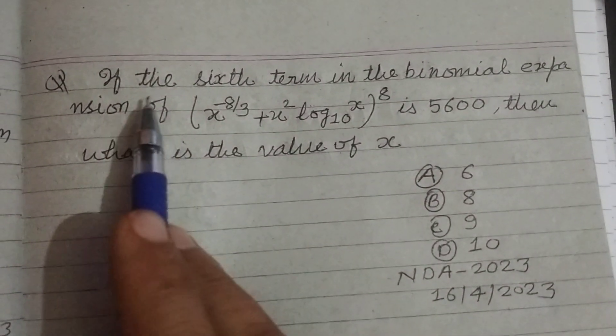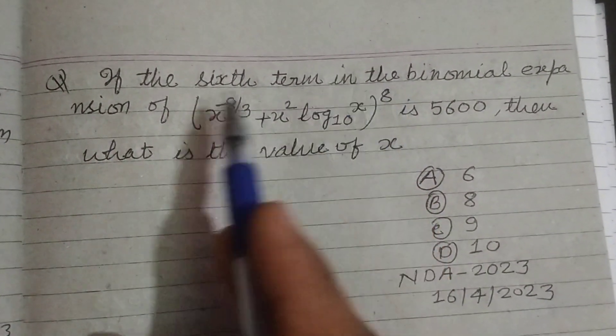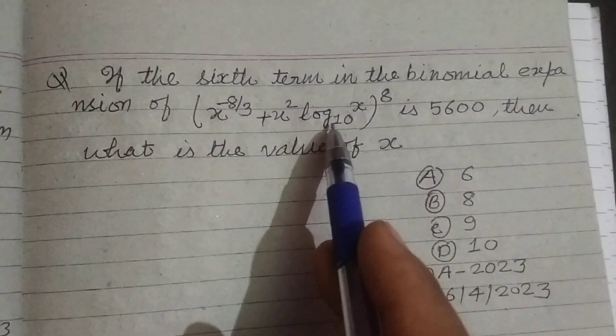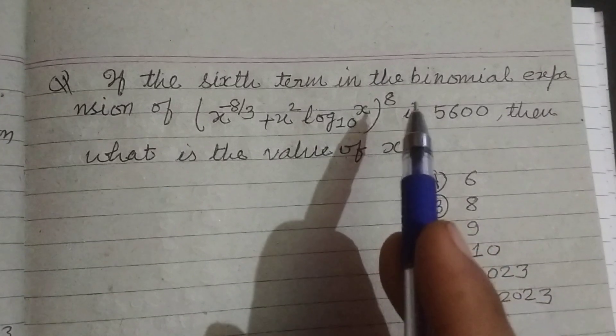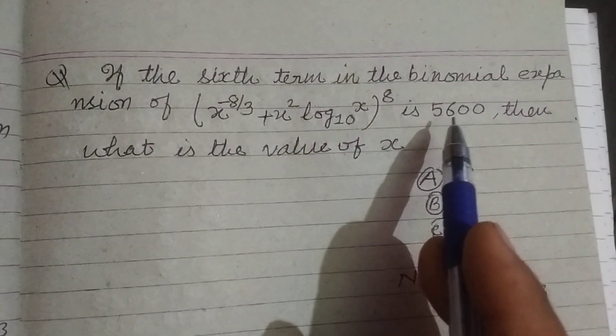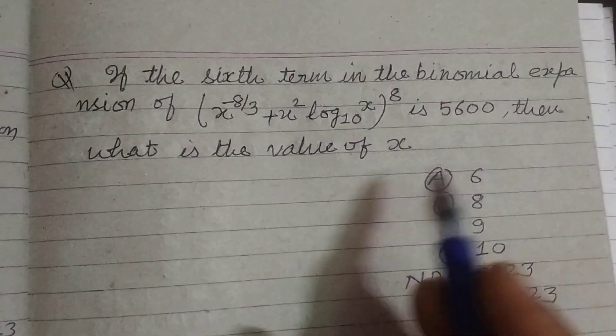Based on binomial expansion, if the sixth term in the binomial expression of (x^(-8/3) + x^2 log₁₀(x))^8 is 5600, then what is the value of x?